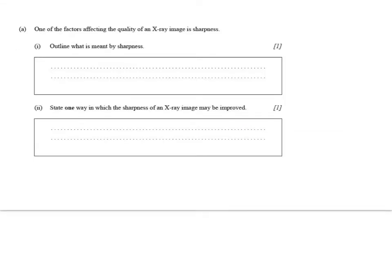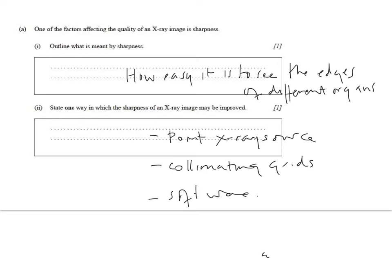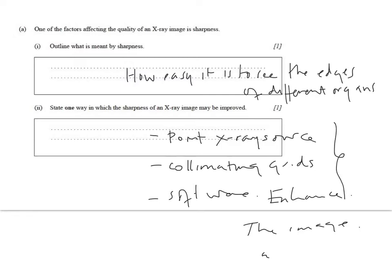Have a go at this past paper question and check the answers by playing the video. What do we mean by sharpness? How easy it is to see the edges of different organs. And how can you increase the sharpness of an x-ray image? By using point x-ray sources, by using collimating grids, or — and this is a new one — by using software to enhance the image. That's on the mark scheme, so we'll use it. Remember, some of the other things we mentioned are specifically about contrast, so you've got to be careful with what the question is about.